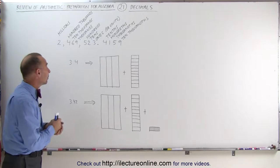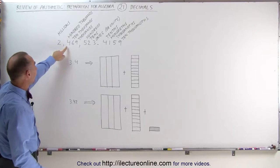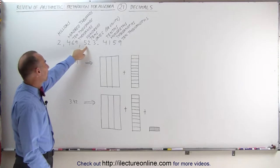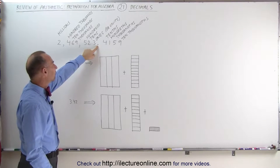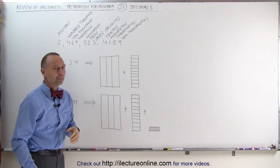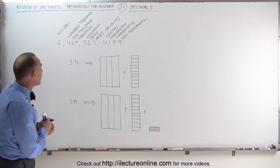Here before us, we have a pretty big number. It's 2,469,523, a decimal place, and then 4159. What do those numbers mean?